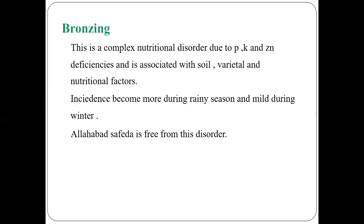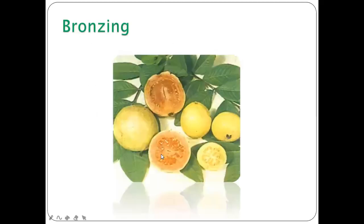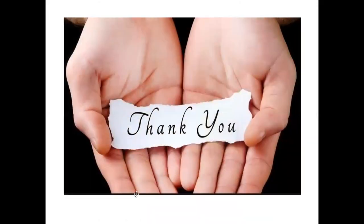Bronzing is a complex nutritional disorder in guava due to deficiency of phosphorus, potassium, and zinc. It is also associated with varietal and topographical factors. Incidence is more during the rainy season and mild during winter. The variety Allahabad Safeda is free from this disorder. Bronzing causes characteristic discoloration of fruits, affecting their market value. This concludes the lecture on production technology of guava.